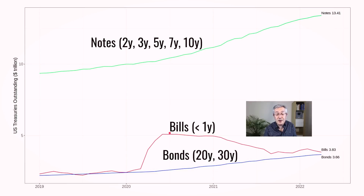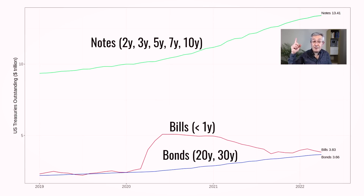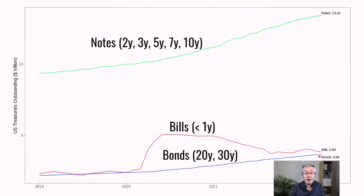Why is the US Treasury not issuing short-dated debt? It probably wants to lock in low interest rates — with rates rising, it's issuing five, ten, and twenty-year bonds to keep rates low for a long period. That way it costs less to service US debt. Notes outstanding at two to ten years have gradually been increasing, and the amount of twenty and thirty-year bonds outstanding has also been gradually increasing. There is a very clear demand-supply imbalance.